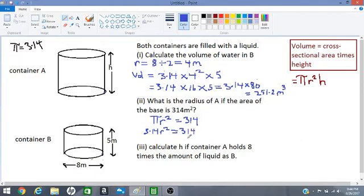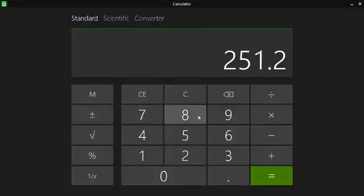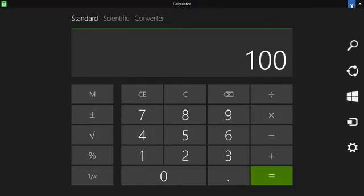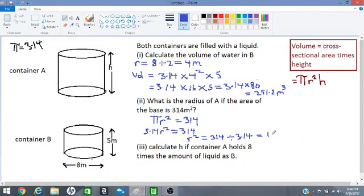Let us divide both sides by 3.14. So we get 314 divided by 3.14. We can use our calculator. 100. So r squared is equal to 100.